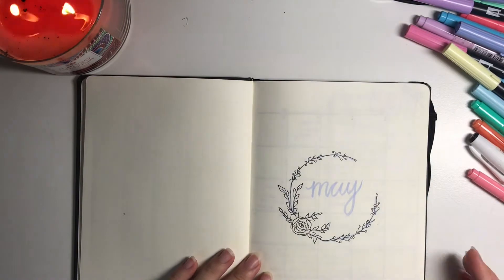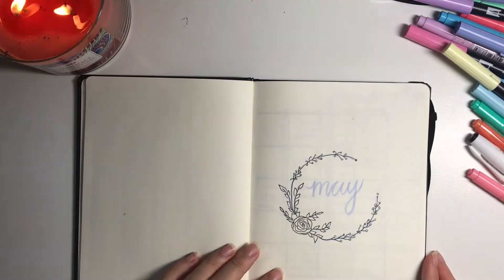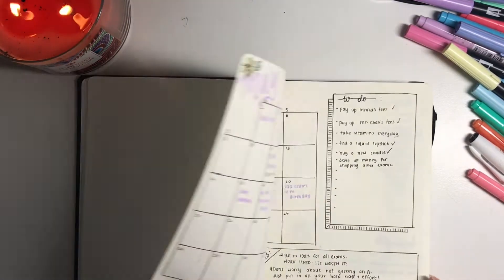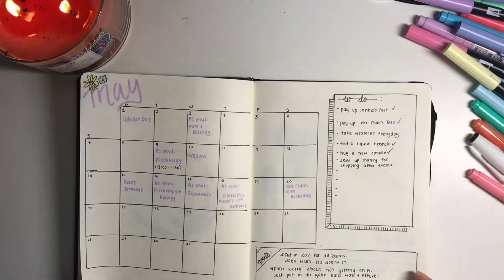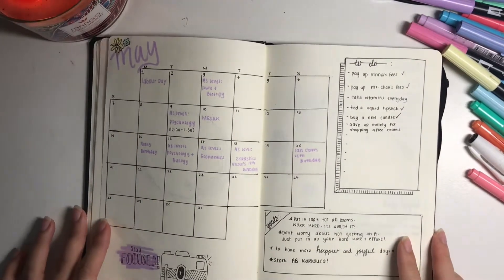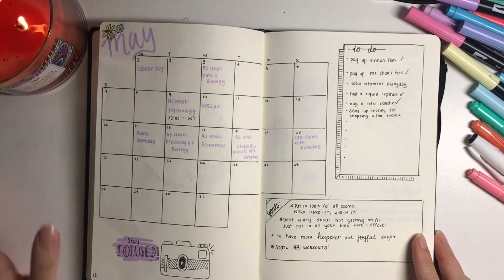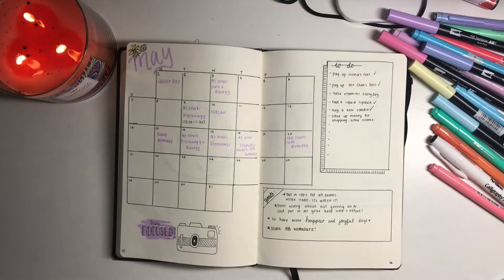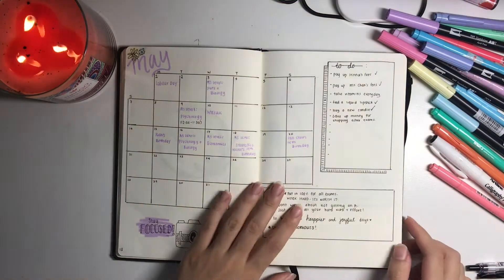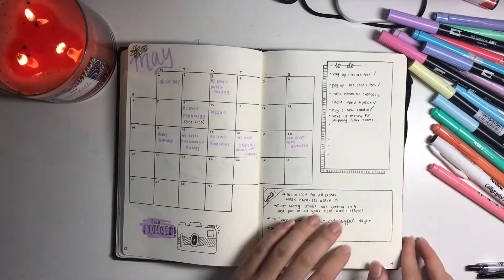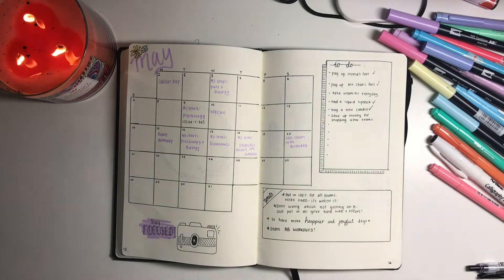On the cover page of the May spread, I drew a wreath and wrote the word May in cursive in a really nice bloom. I have all my tools listed down below and then I have my month at a glance, so it's just a calendar to see which dates for which day. Because it was exam season, I put in my exams, which day I have them on, and on the bottom I drew a little camera and said 'stay focused.'